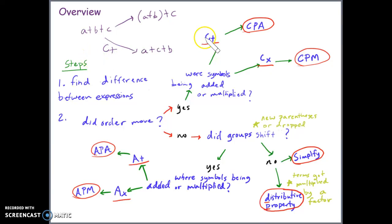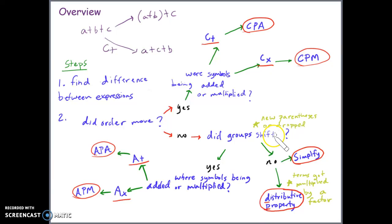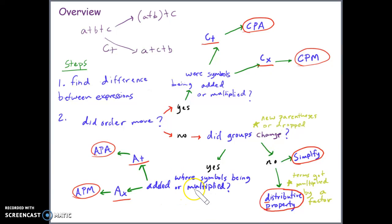Because the symbols were being added, we know the property that allowed us to rewrite the expression is the commutative property of addition, or CPA. Now going back to the middle expression and the one above it: did the order move? No — it's ABC, ABC. Did the groups change? Yes — there are new parentheses. Since the parentheses group things being added, this is the associative property of addition.